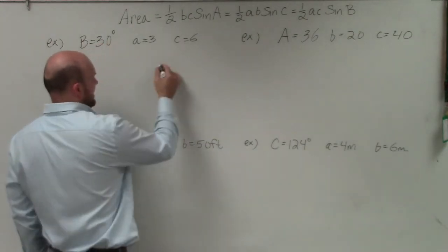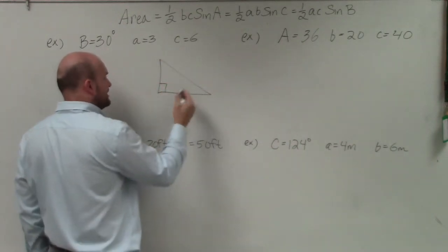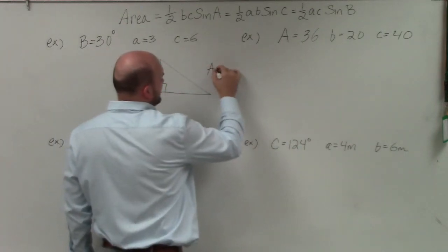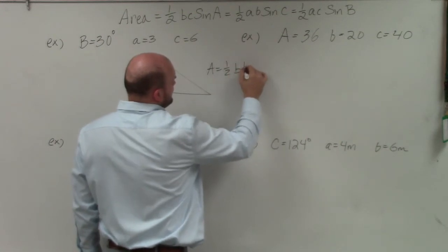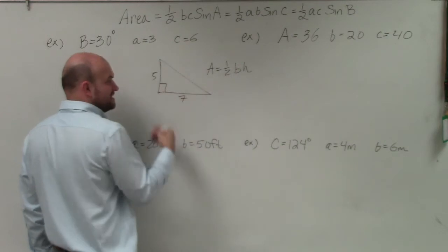Previously, when you've learned how to find the area of a triangle, first of all we looked at right triangles. We went through that the area equals 1/2 times base times the height. And basically, you're always given what the values were of the base and the height.